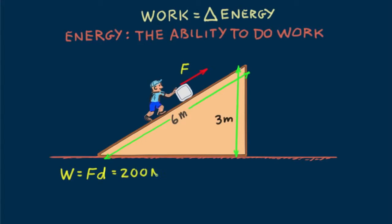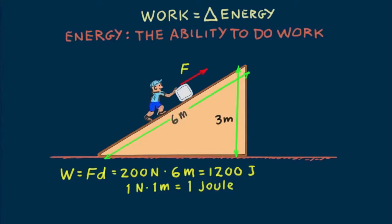The work he does on the block is 200 Newtons times 6 meters equals 1200 joules. The unit of energy is the joule, where one joule is the work done by one Newton over a distance of one meter. So at the top of the three-meter-high ramp, the block of ice has acquired 1200 joules of energy that it didn't have at the bottom.